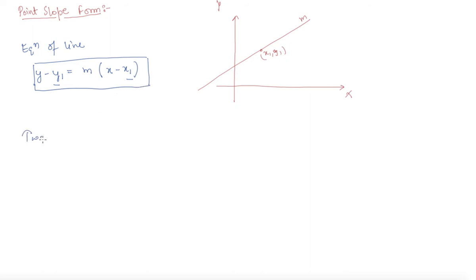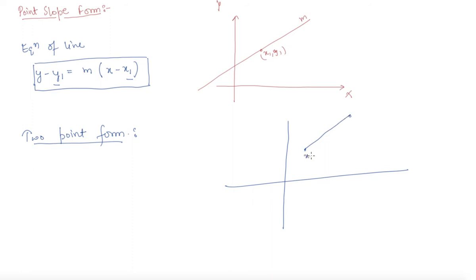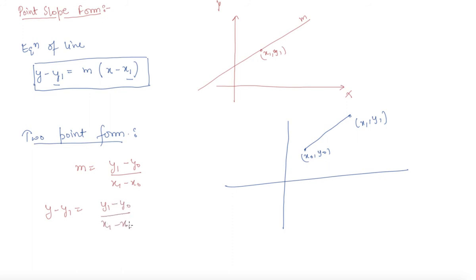Now let us discuss about two-point form. In two-point form, we are given that the line is passing through two points — let us say x0 comma y0 and x1 comma y1 — and we need to find out the equation of this line. The slope of the line will be y1 minus y0 upon x1 minus x0. In place of m, we put this, so the equation will be y minus y0 equals y1 minus y0 upon x1 minus x0 into x minus x1. This is the equation of the line when it is passing through two points.